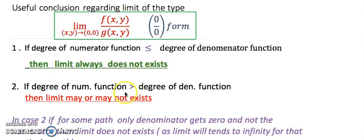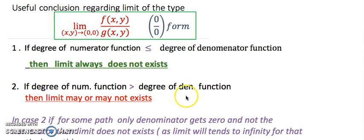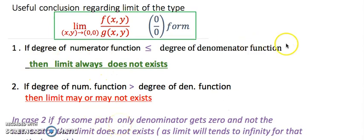Now if the degree is more — when you see that the upper expression has more powers and your denominator has less — then there is a chance that the limit will exist or it may not exist. When I discuss some questions under this situation, I will share some more conclusions which will help you find the answer.